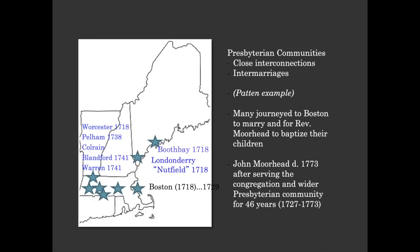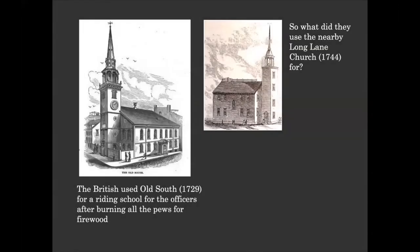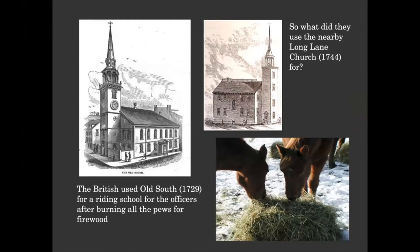Moorhead died in 1773. Some people have said in a way it's good that's when he passed, because he was still an ardent Loyalist and it would have been tough. During the British occupation, they used Old South for a riding school after burning all the pews for firewood — Boston ran out of trees pretty fast. As for Long Lane Church, they used it to store the hay for their horses.